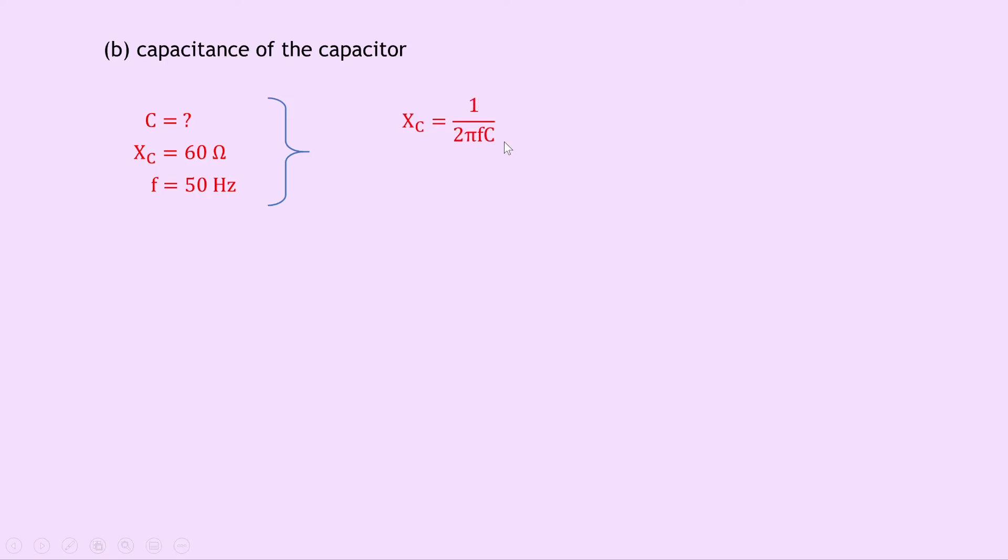And substituting in the numbers, we get 60 equals 1 over 2 pi times 50 times C. And then if we rearrange this for C, we can cross multiply to get C equals 1 over 2 pi times 50 times 60. And this gives us C equals 5.3 times 10 to the minus 5 farads.